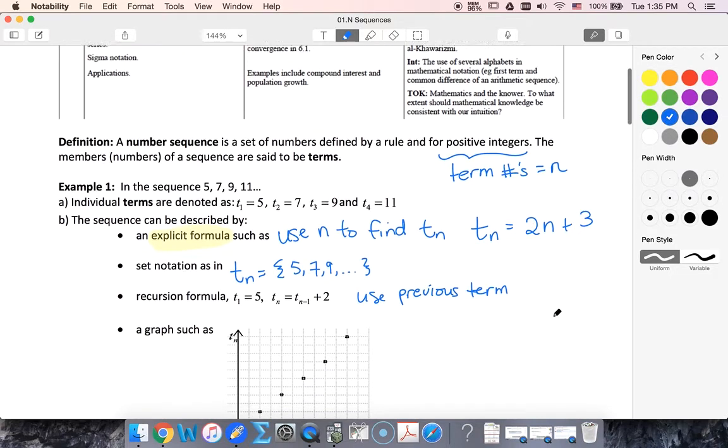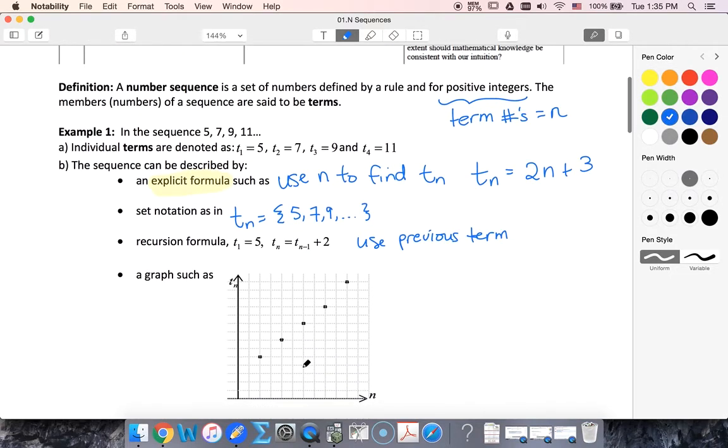I could also graph out a sequence to show its values. So here I need some labels. Remember we said that it's defined for positive integers. So this must be 1. Here's 2. It's only positive integers. There is no one and a half term. Therefore, I have set of dots that are not connected.